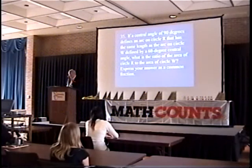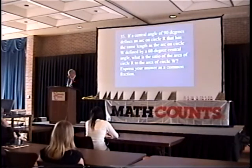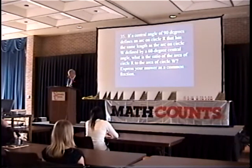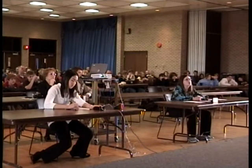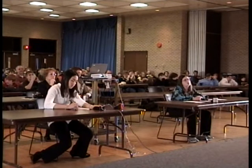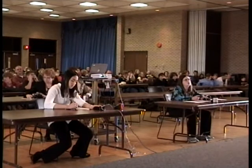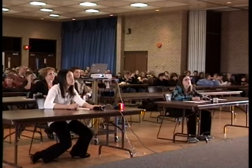If a central angle of 90 degrees defines an arc on circle R that has the same length as the arc on circle W defined by a 60 degree central angle, what is the ratio of the area of circle R to the area of circle W? Express your answer as a common fraction. Katie? 9/4. 9/4 is incorrect. Ingrid? 90. That's the same answer. The answer is 4/9.